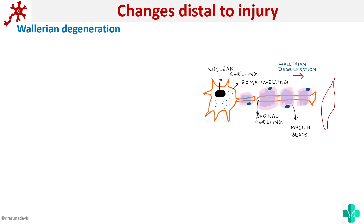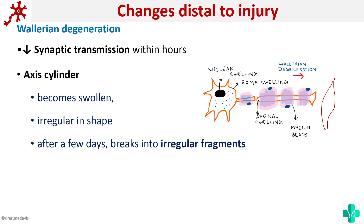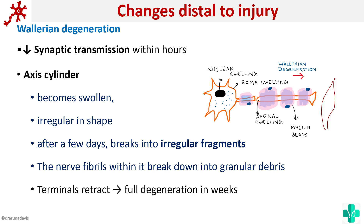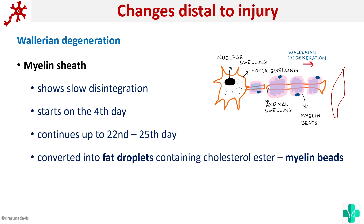The changes distal to the injury are called Wallerian degeneration. First, synaptic transmission decreases. The axon becomes swollen, irregular in shape, and after a few days disintegrates into irregular fragments, with the neurofibrils breaking down to granular debris. The terminals retract and full degeneration takes weeks to complete. The myelin sheath shows slow disintegration starting on the fourth day and continuing up to a month; it is converted to fat droplets containing cholesterol esters, forming myelin beads. This disintegration is caused by calcium-dependent proteases activated by a rapid influx of calcium.